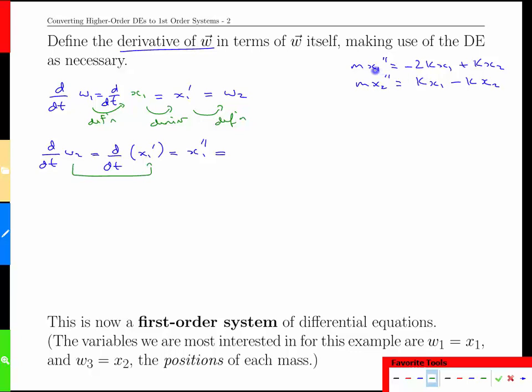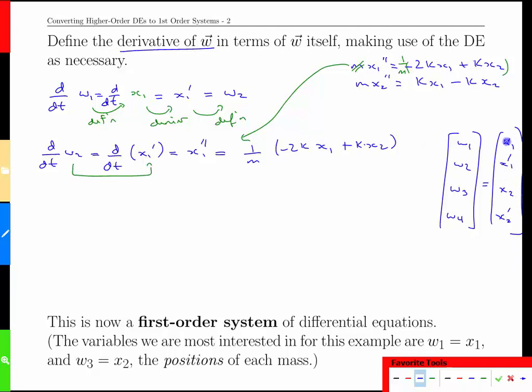We have a relationship that involves x₁ double prime, so we're going to bring this down. What we're going to do of course is get rid of this m—we don't want it here—we want just x₁ double prime by itself. So we'll have 1/m times everything inside there: 1/m times negative 2kx₁ plus kx₂. However, we're trying to write the derivative of these new w variables in terms of the w's themselves.